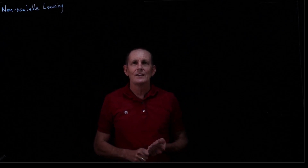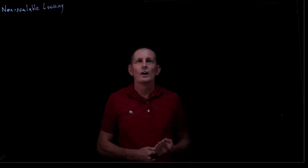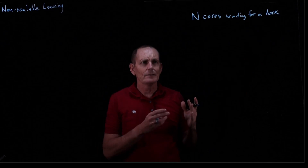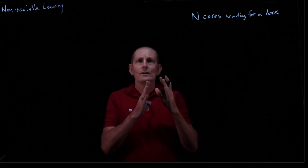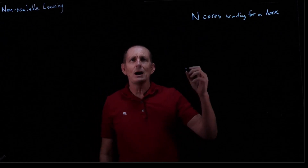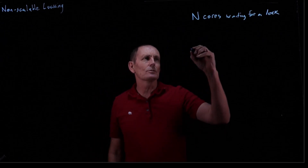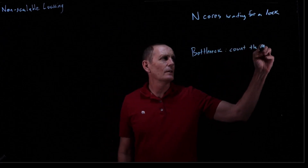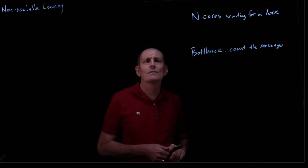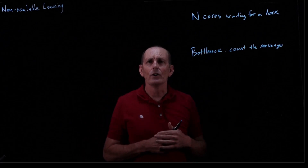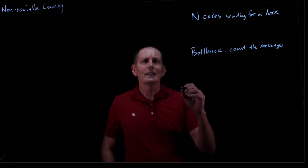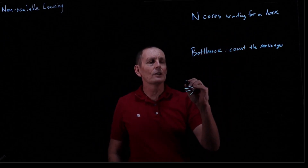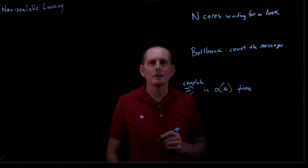Let's talk about back to locking. Say N cores are waiting for a lock. The question is how long does it take to hand off from one core that has the lock to the next core that's waiting for it? That bottleneck is usually some sort of interconnect between those cores. So let's just count the finds and the invalidates — that'll give us an estimate of our overhead. Our goal is to get through all N cores in O(N) time, completing all of them getting through their locks.